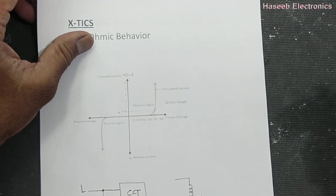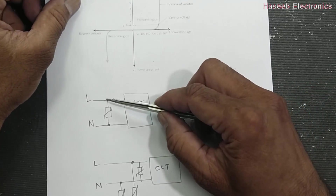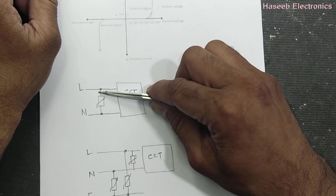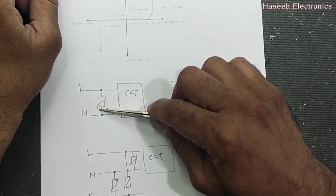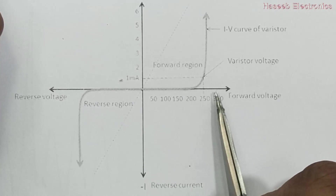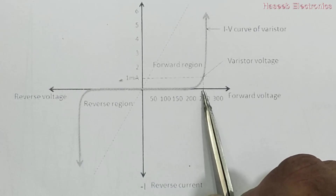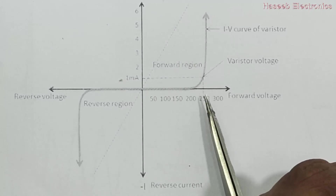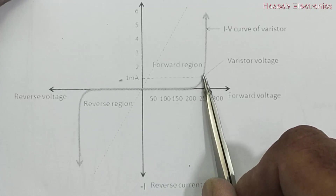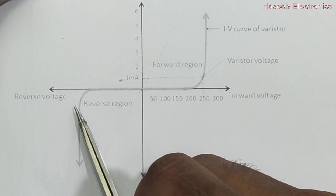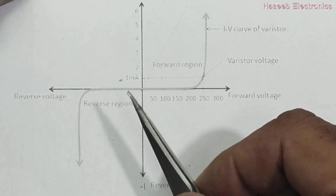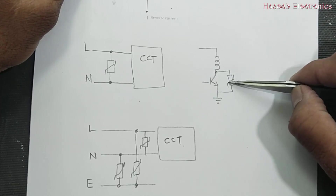Normally it is connected in parallel between line and neutral. It is used for protection. In normal conditions, when the voltage is less than its rated value, it will stay silent. When the voltage reaches above its limit — for example if this component is rated for 250 volt — below 250 volt it remains silent, but if the voltage reaches above 250 volt it will allow maximum current to flow, in either the positive or negative direction. So it is a bidirectional conductor used for protection.